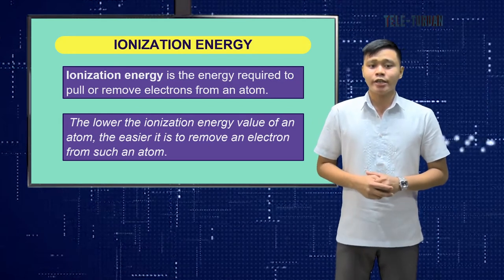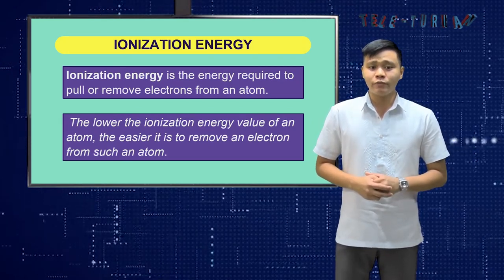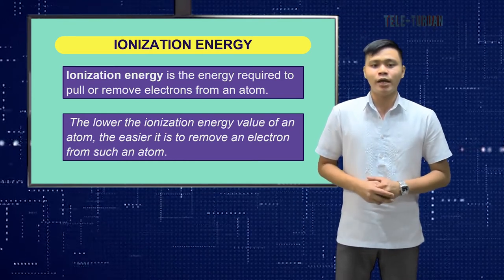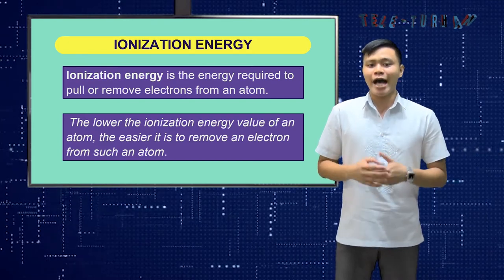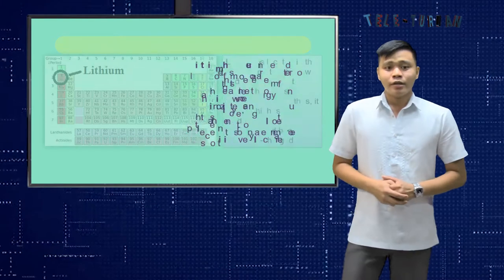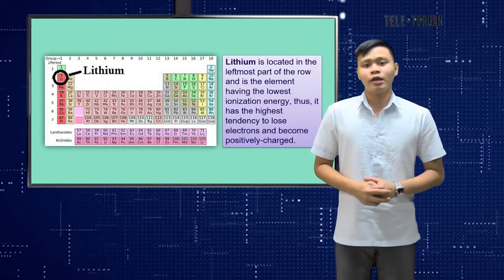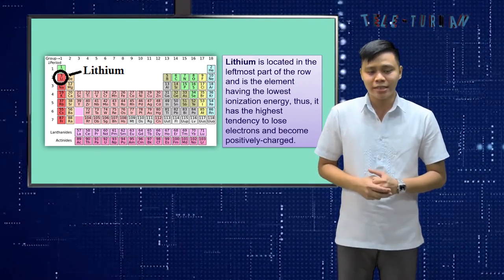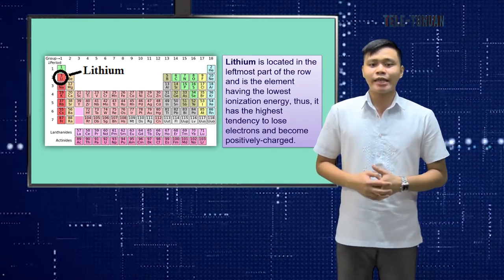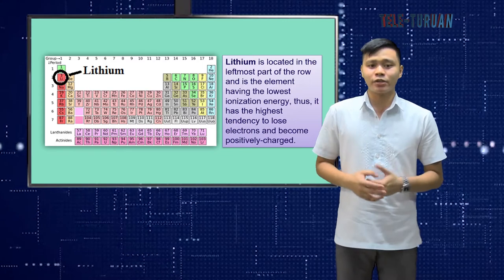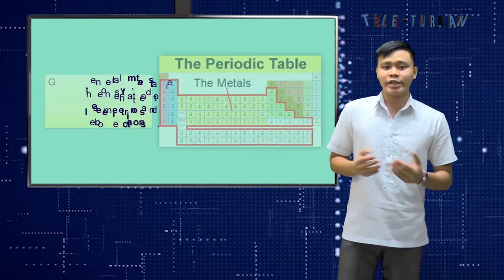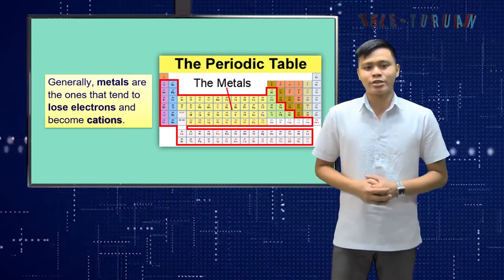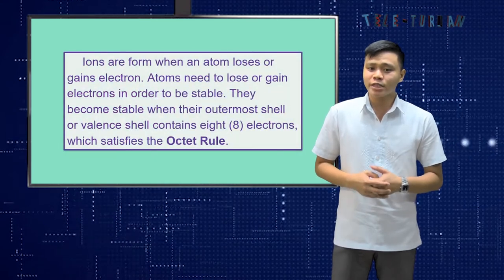Ionization energy is the energy required to pull or remove electrons from an atom. The lower the ionization energy value of an atom, the easier it is to remove an electron from it. In period 2 of the periodic table, lithium is located in the leftmost part of the row and has the lowest ionization energy. Thus, it has the highest tendency to lose electrons and become positively charged. Generally, metals are the ones that tend to lose electrons and become cations. Ions are formed when an atom loses or gains electrons.